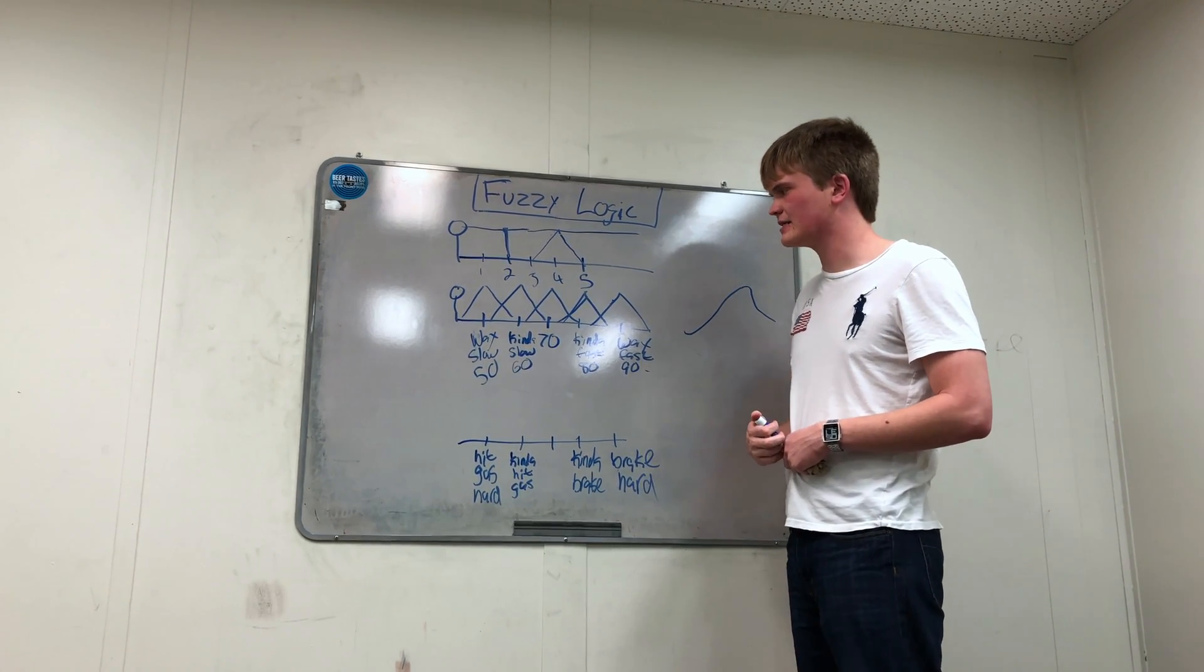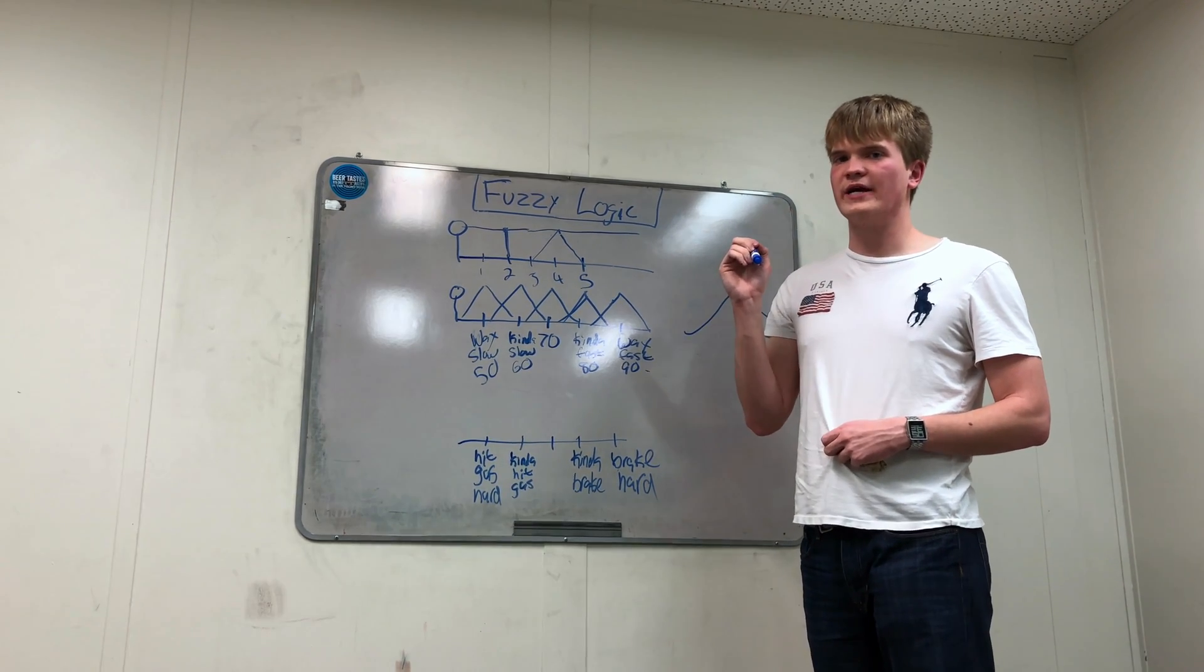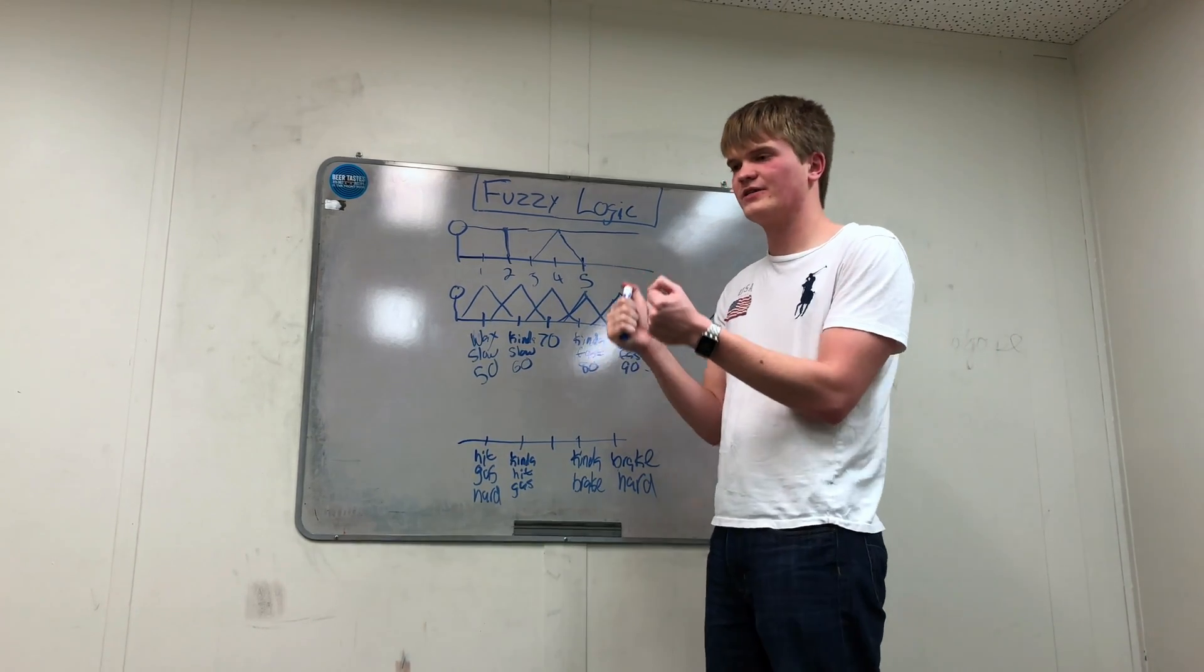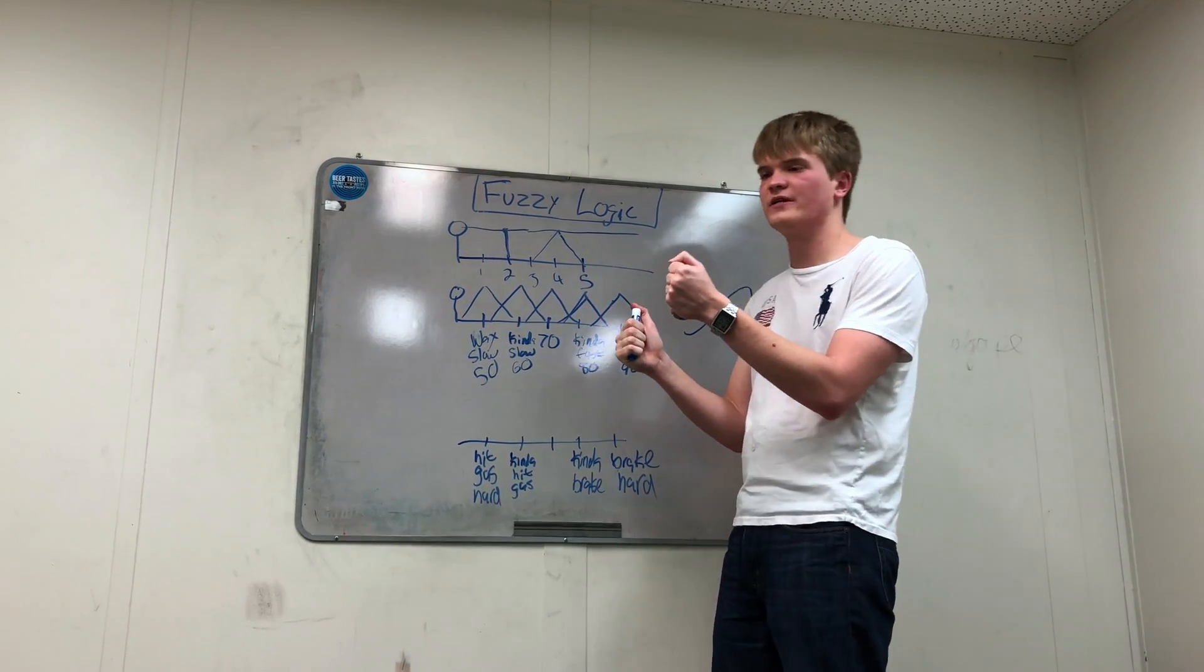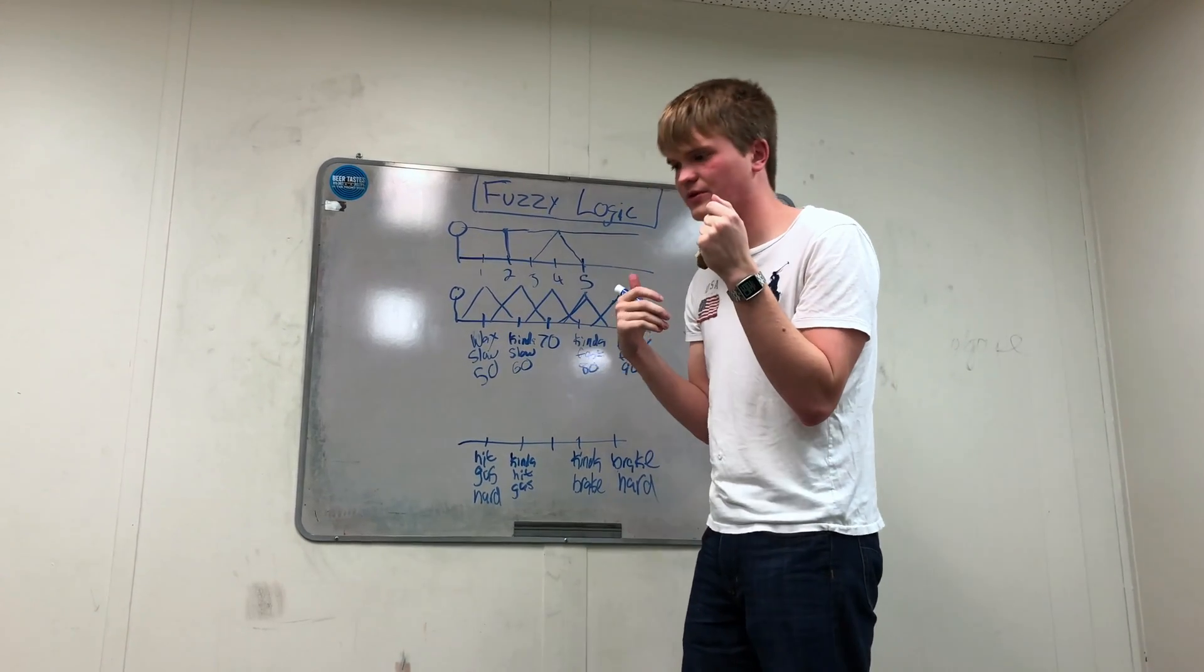Well, it's this continuous spectrum. As your car slows down more and more and more, you hit the gas harder and harder and harder. If there were not this continuous spectrum, then as you were driving, you'd get jolted everywhere. You'd get jolted back when you accelerated and you'd get jolted forward when you braked.